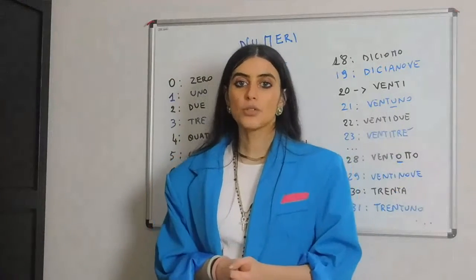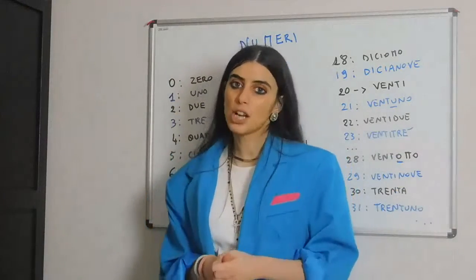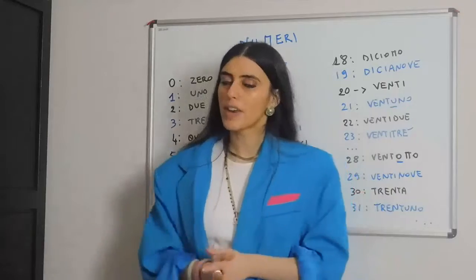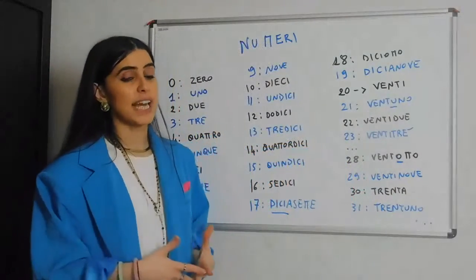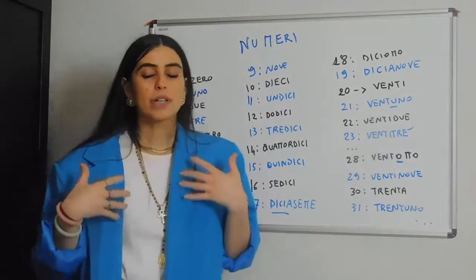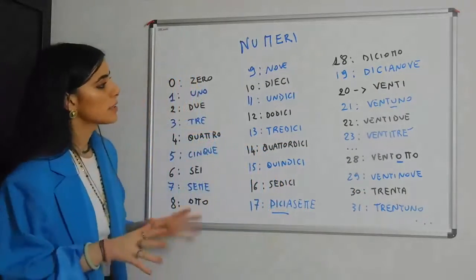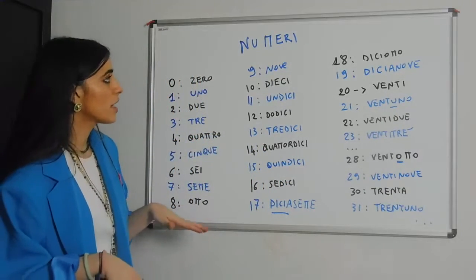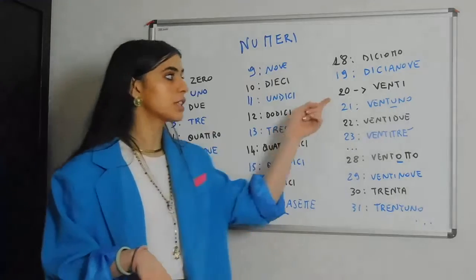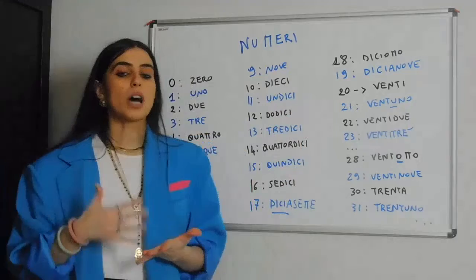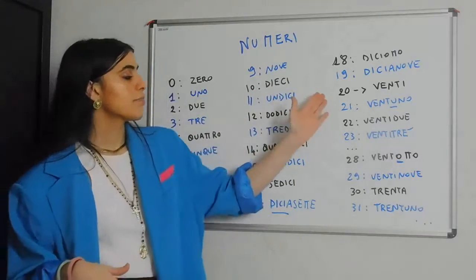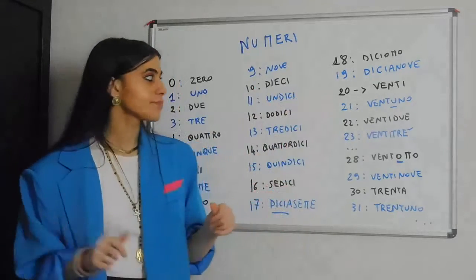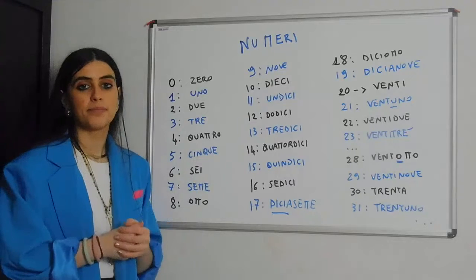Hello guys, welcome to this new episode and welcome back to this channel. Today we are going to learn something about numbers — hopefully quite a bit about numbers. The first thing to know is that we're going to learn necessarily up until 20, because up until 20 the numbers are all irregular. When you get to 20, you pick again the first 10 numbers and repeat them over and over. Let's start.